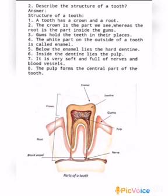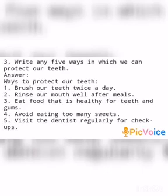Again, repeating the answers: A tooth has a crown and a root. The crown is the part we see, whereas the root is the part inside the gums. Gums hold the teeth in their places. The white part on the outside of your tooth is called the enamel. Below the enamel lies the hard dentine. Inside the dentine lies the pulp. Pulp is very soft and full of nerves and blood vessels. The pulp forms the central part of the tooth.